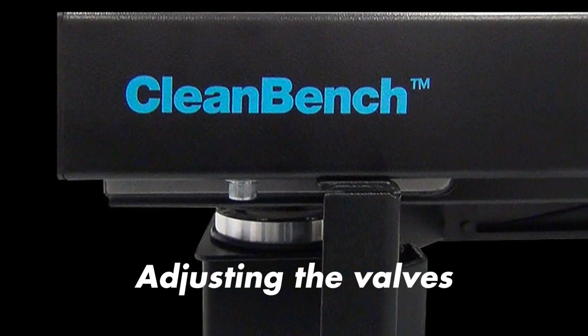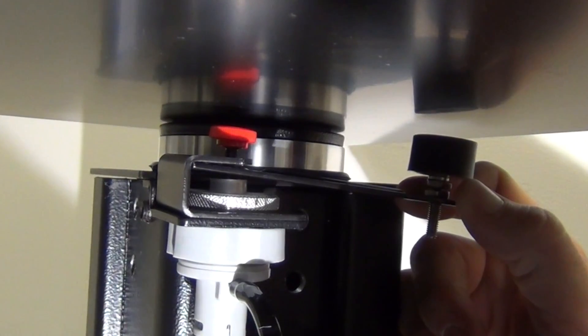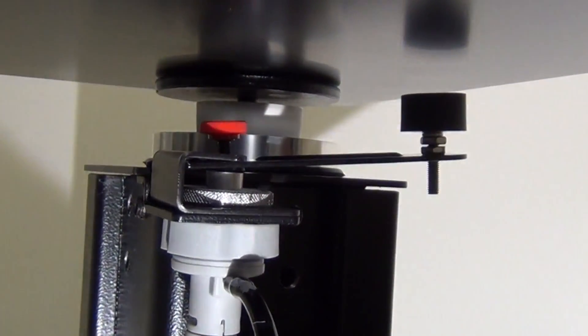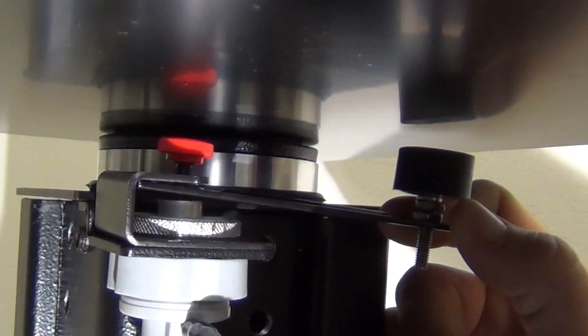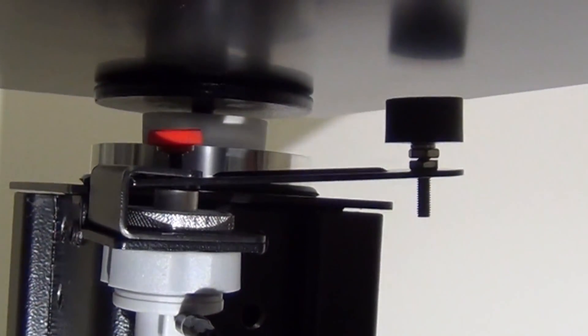We are going to start with adjusting the air in the back left leg. This leg also controls the back right leg. Push the valve lever arm down and become familiar with how the isolator responds. Run the isolator all the way up to its max travel. Notice the rate at which the isolator moves. Listen for the airflow.